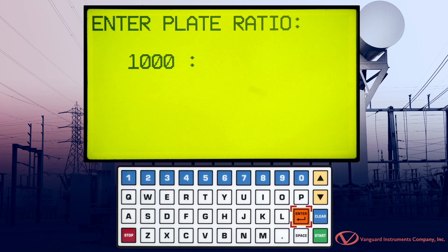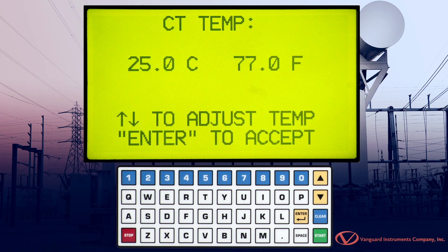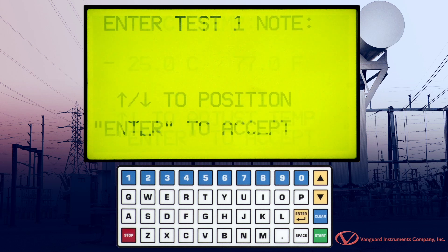Type the first number and then press the Enter key. Type the second number and then press the Enter key. You can change the CT temperature by pressing the up and down arrow keys. For this example, we'll accept the default value and press the Enter key.